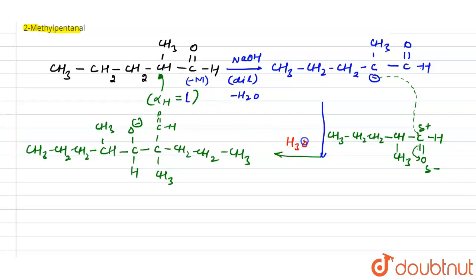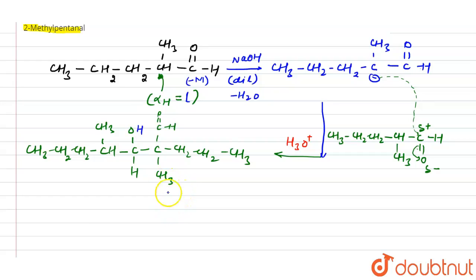After the nucleophilic addition, we do protonation using H3O+, which converts the O− directly into OH, giving the beta-hydroxy aldehyde as the aldol product. If we heat this compound, dehydration can occur.